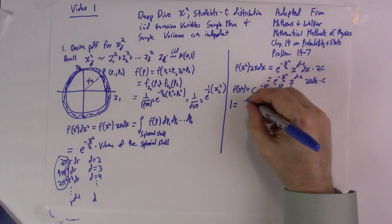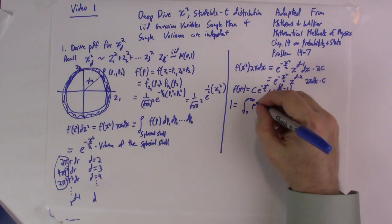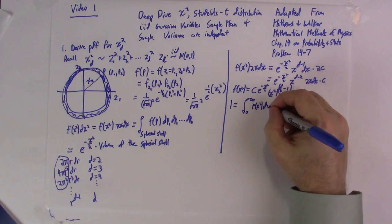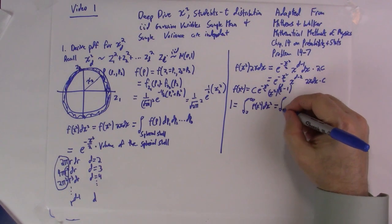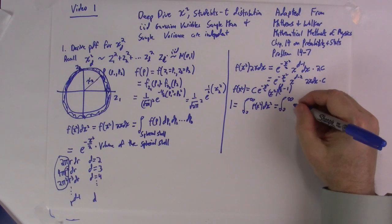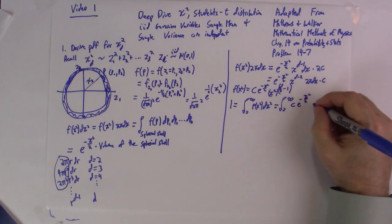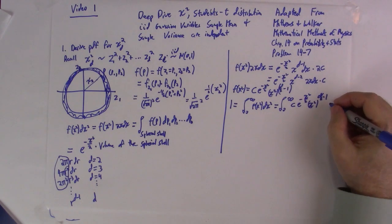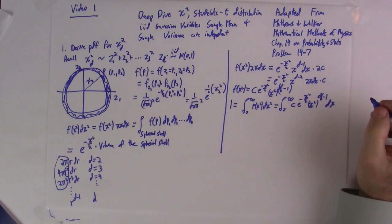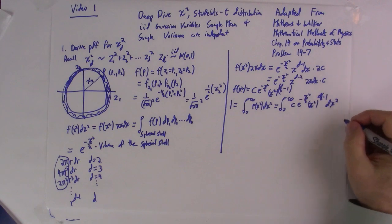1 is equal to the integral from 0 to infinity, f of chi-squared d chi-squared, which is equal to the integral from 0 to infinity of the constant e to the minus chi-squared over 2, chi-squared to the d over 2 minus 1, d chi-squared.